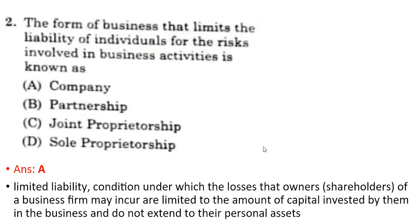Second question: the form of business that limits the liability of individuals for the risks involved in the business activity is known as a company. Limited liability is a condition where the losses incurred by the owners or shareholders in a business are subject to the amount of capital invested by them and do not extend to their personal assets. So the correct option is A.